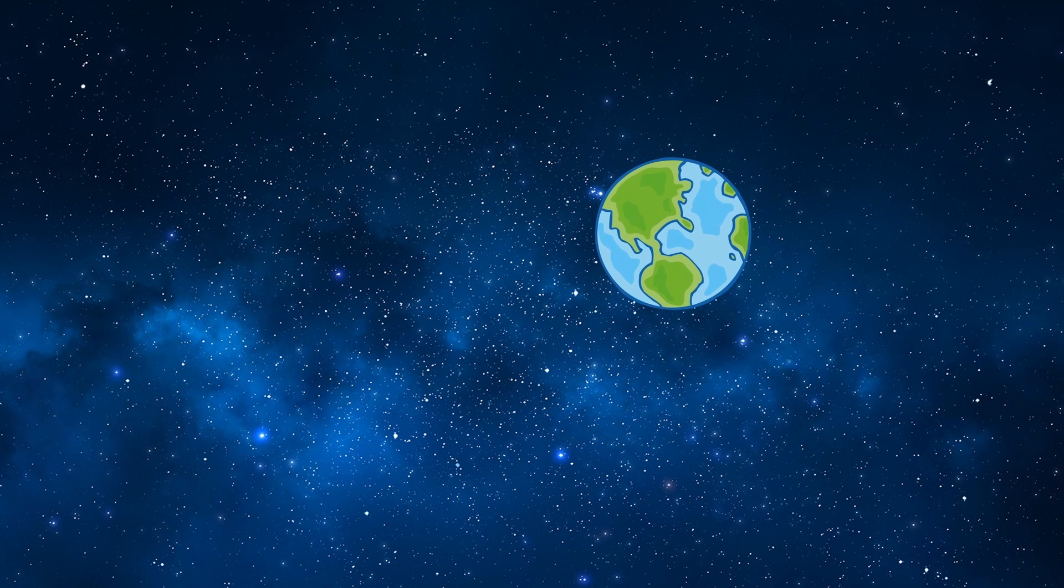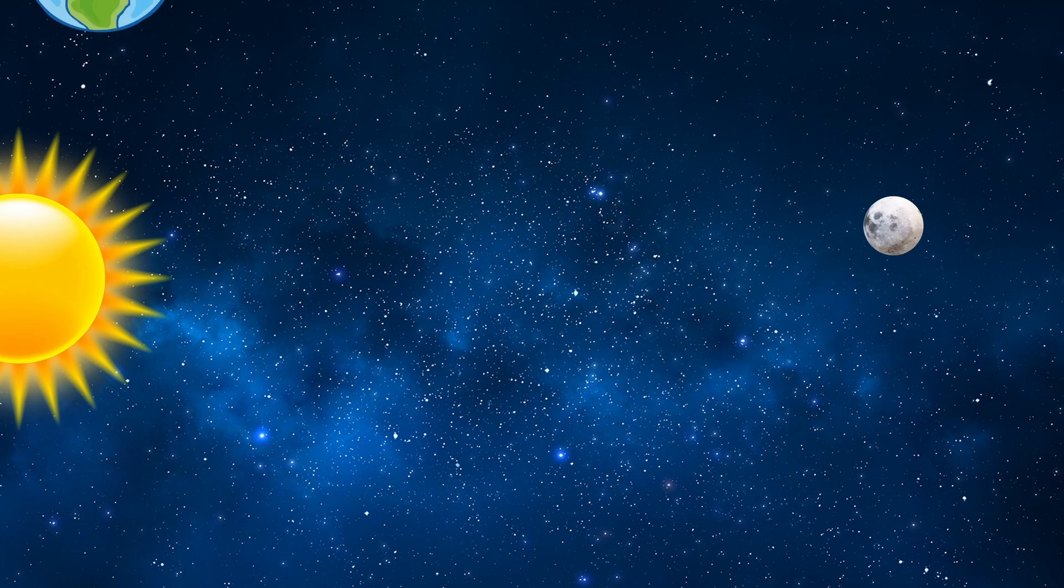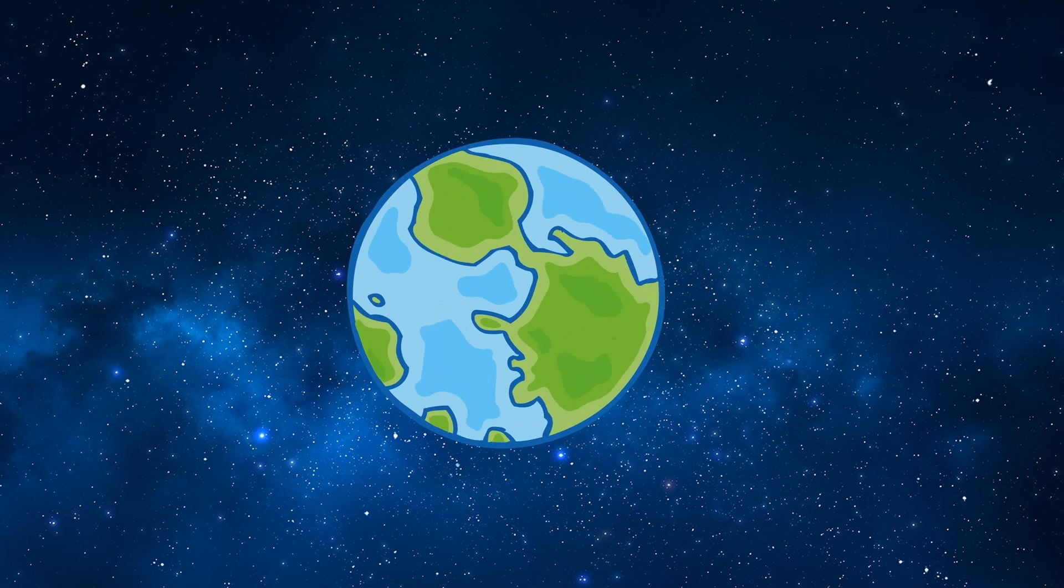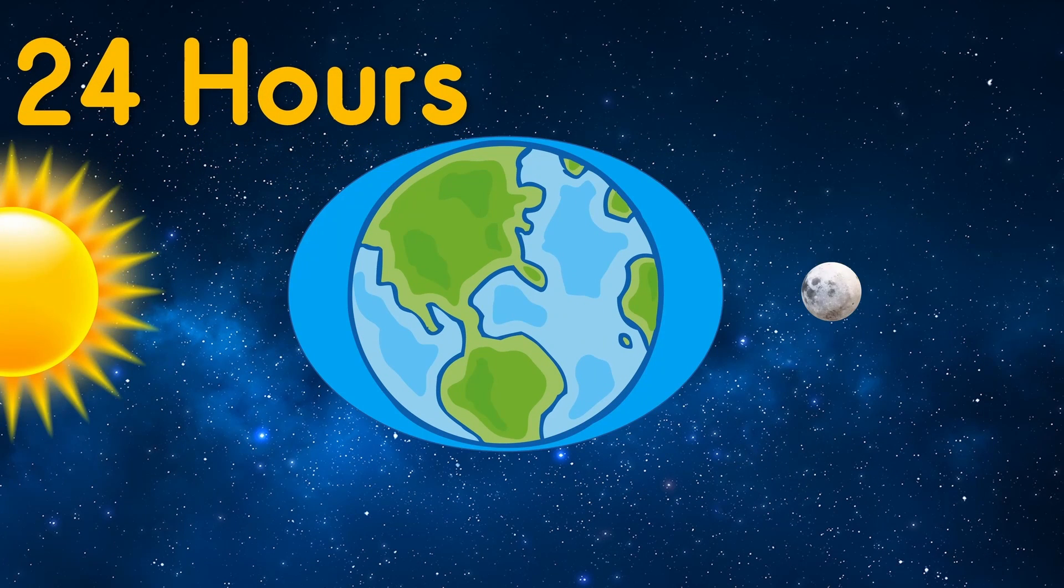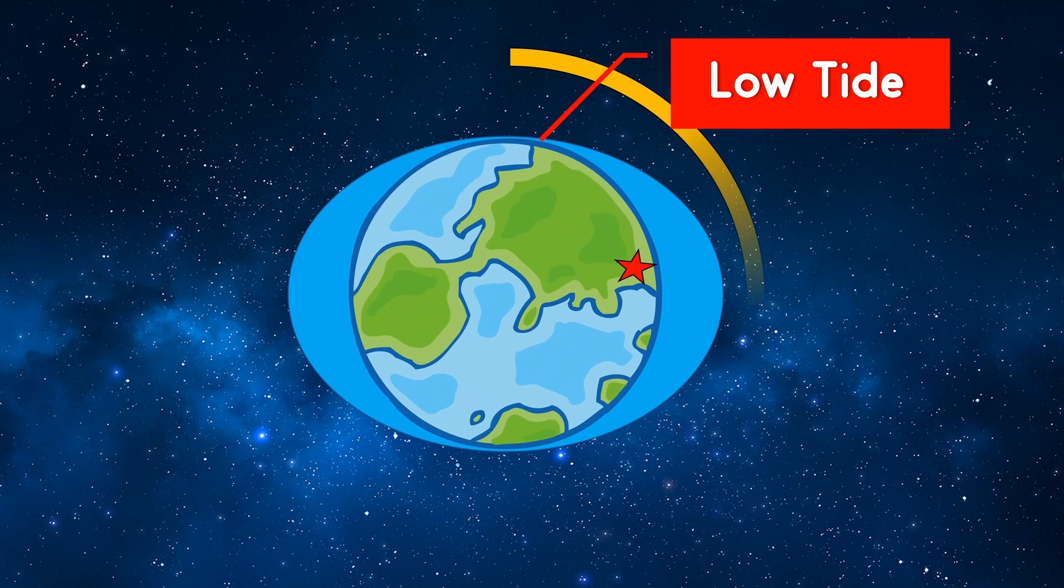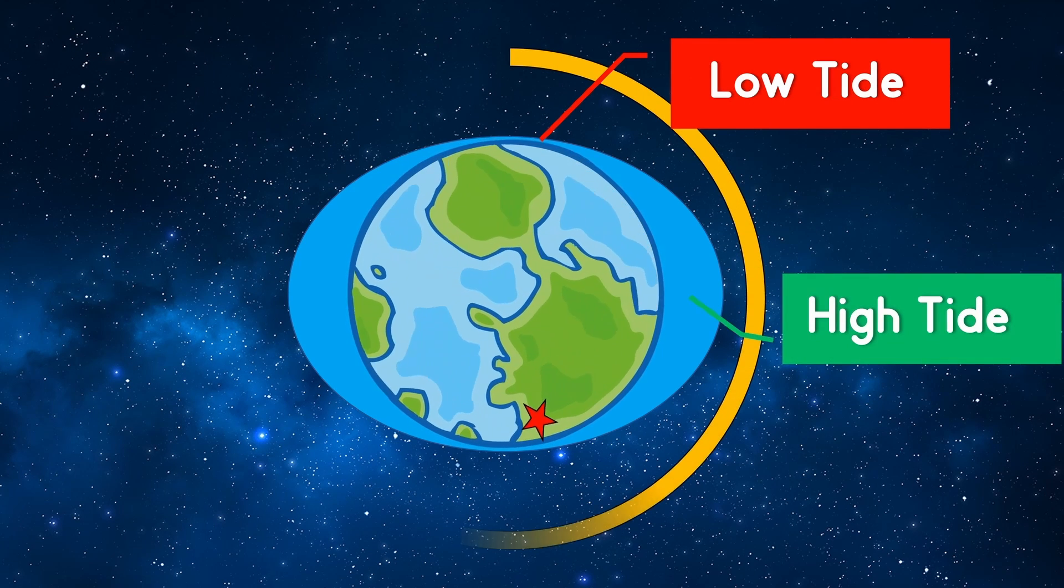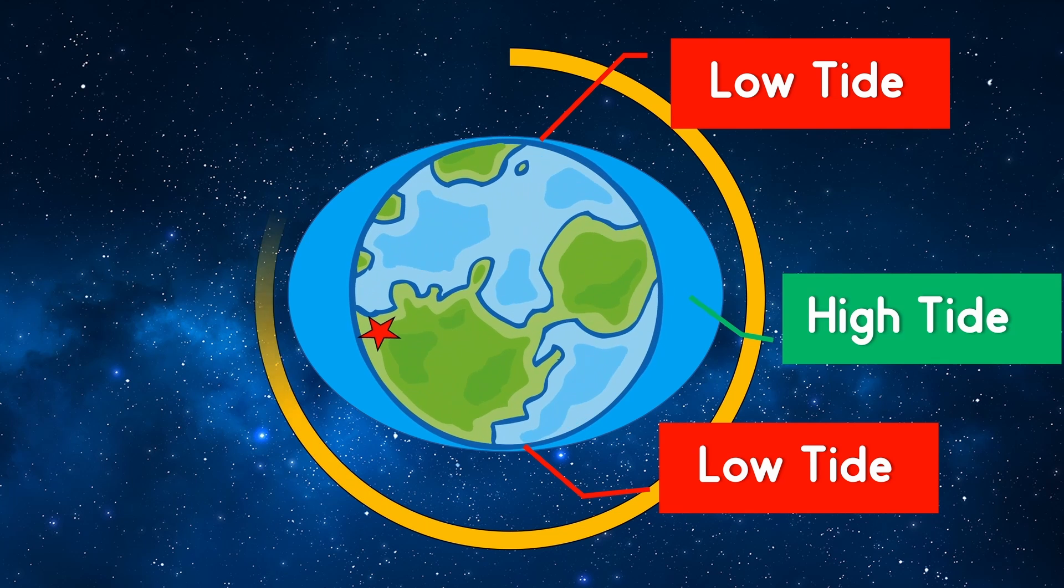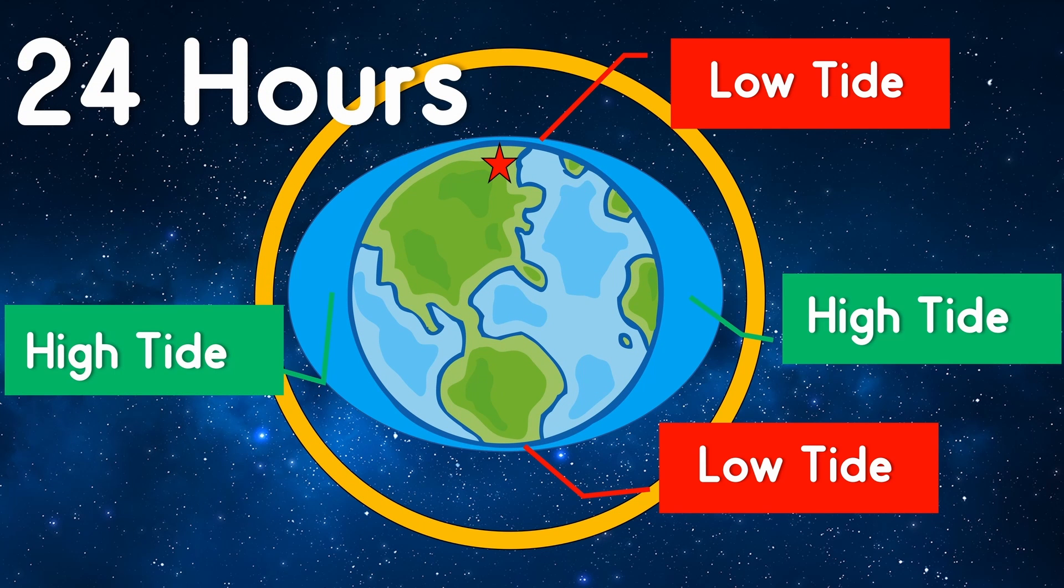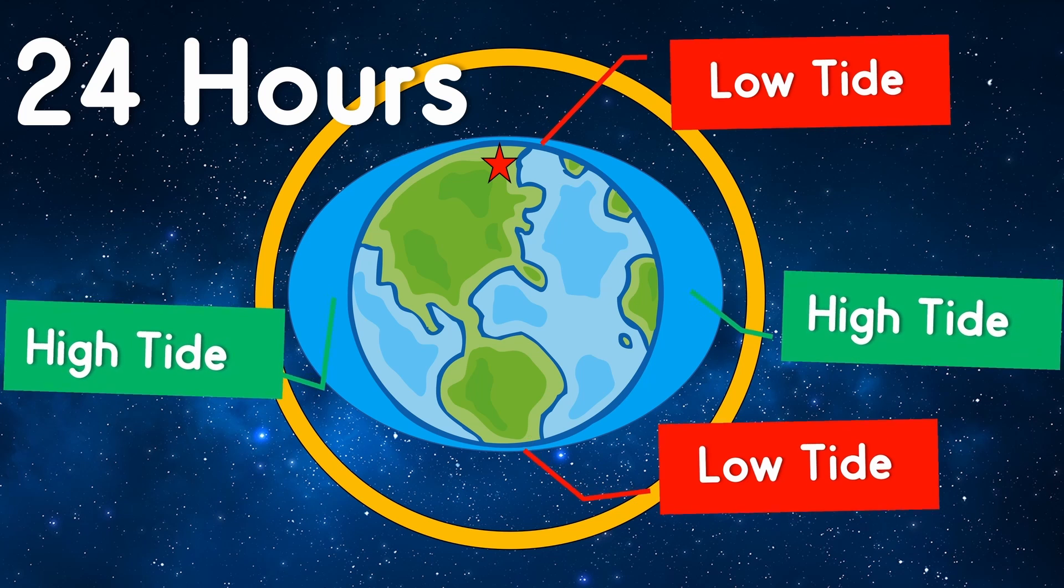We know that the earth orbits the sun once every 365 days and rotates about its axis once every 24 hours. Let's consider this region on the earth. As the earth rotates, this region passes through both of these bulges every 24 hours. This means in 24 hours we'll experience two high tides and two low tides.